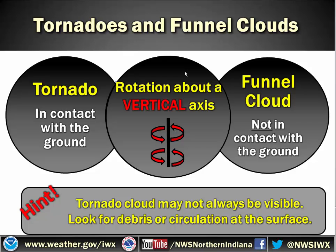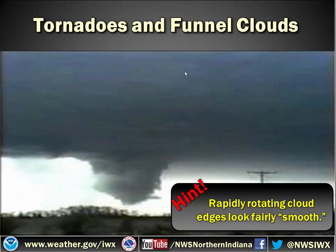The more challenging aspect of this is that tornado clouds aren't always visible. You could have a tornado but might not be able to see that it's touching the ground. The key there is to look for debris or some kind of circulation — maybe some trees or dust spinning around at the surface — to see if that circulation has touched the ground. One of the different things to also note is that when clouds are rapidly rotating, the edges of that cloud feature look very smooth versus more jagged and ragged.